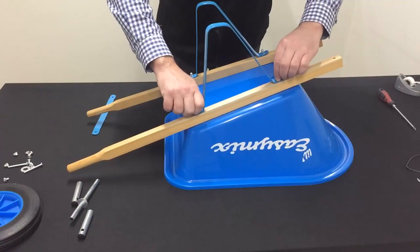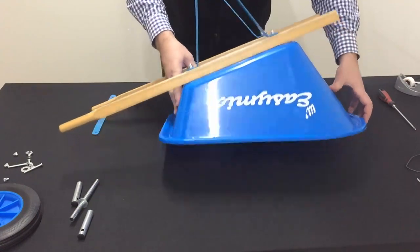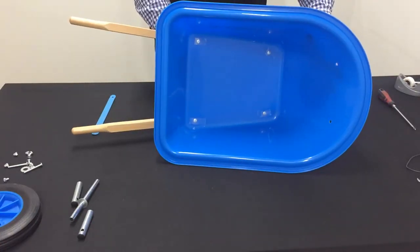Once that is all done, we can turn the barrow over, remove the tape and tighten up our nuts and bolts.